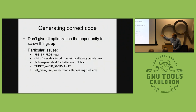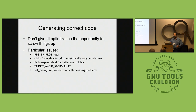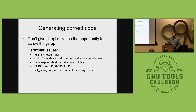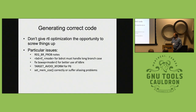I discovered that I really need to put branch probability notes on all the branches I generate, because otherwise the code ordering passes make stupid decisions without any understanding of which way these branches are supposed to go. I also ended up fixing the bswap because it didn't do a good job of making use of the fact that ldbrx is an indexed load.